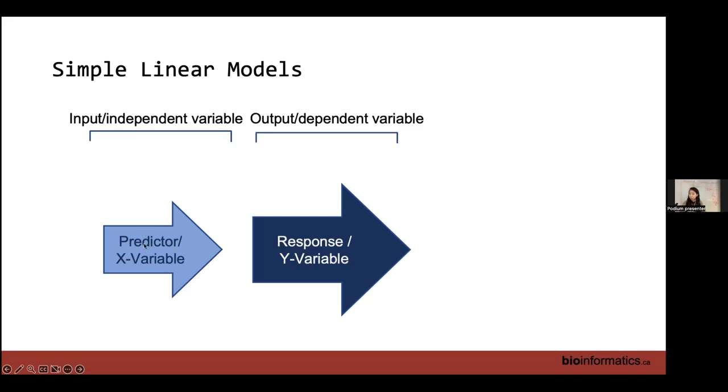So our predictor variable generally is our x variable, also can be referred to as the input and independent variable. Whereas our response variable is on the y-axis and can also be called the output and dependent.